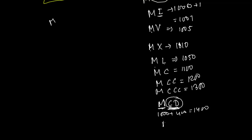MD means 1000 plus 500, which is 1500. Adding one more C gives MDC = 1600. One more gives MDCC = 1700. One more gives MDCCC = 1800. You cannot add another C here, so 1900 cannot be written that way.